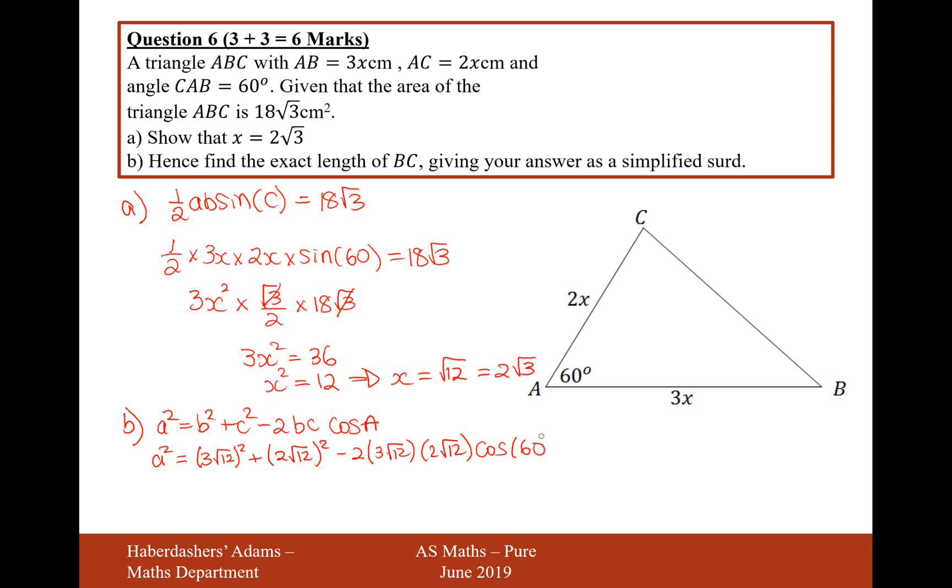Cos 60 is a half. So let's expand the brackets. It's going to be 9 times 12. 9 times 12 is 108. Let's just check that in the calculator. 9 times 12 is 108.